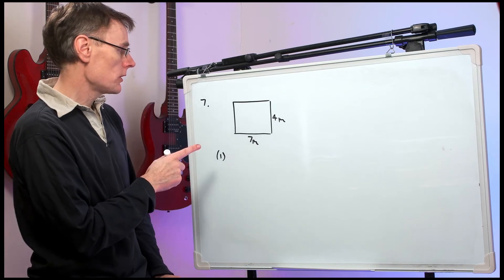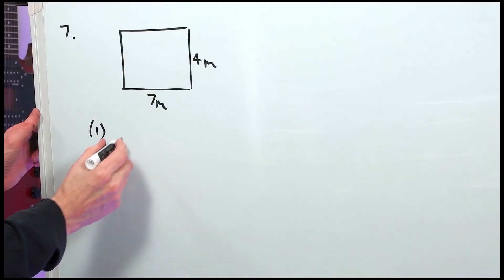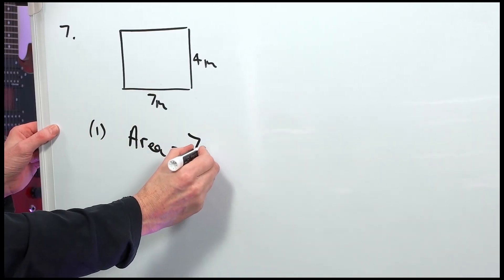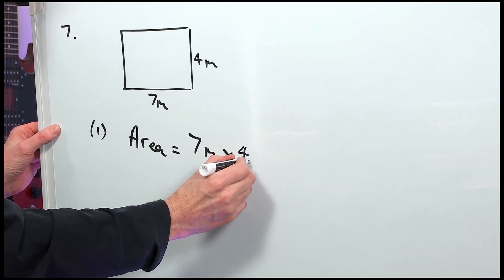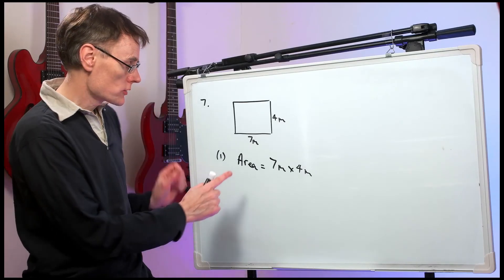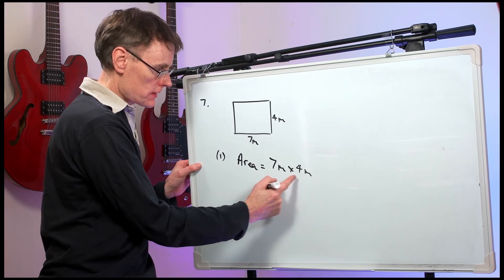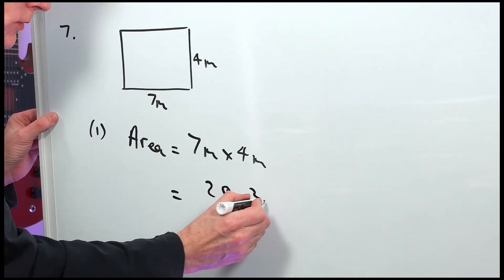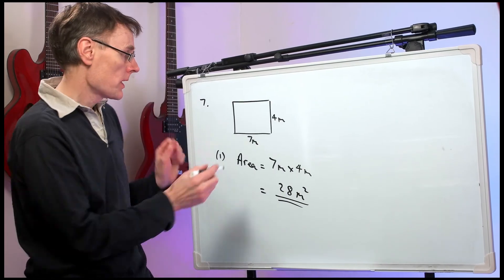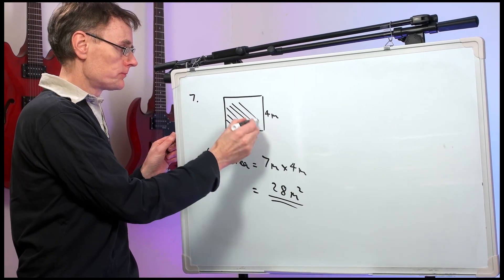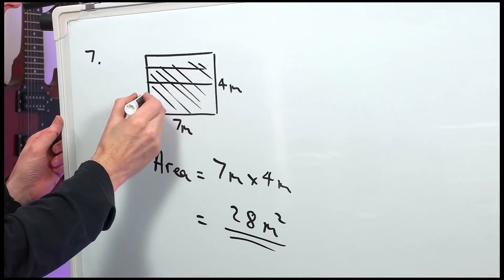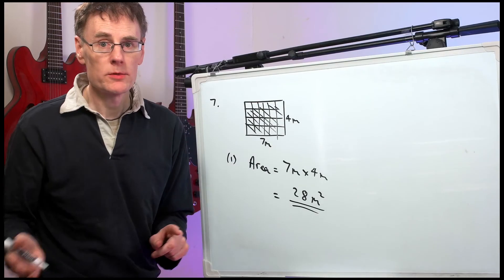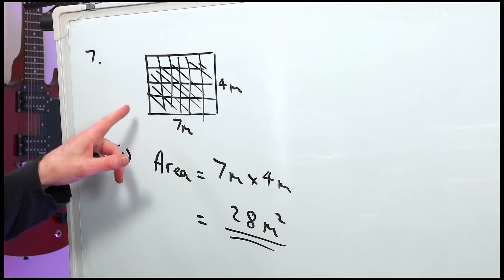All right, question number 7. We had a rectangle and we had to first of all work out the area. So, we write this. Area equals, it's 7 metres times 4 metres. Now, you get one mark if you wrote all of that out properly. That comes to 7 fours are 28. Metres times metres makes metres squared. Remember, we're working out an area. That's that space inside the rectangle. It's divided up into squares like this. How many squares would there be? 7 times 4 would be 28.